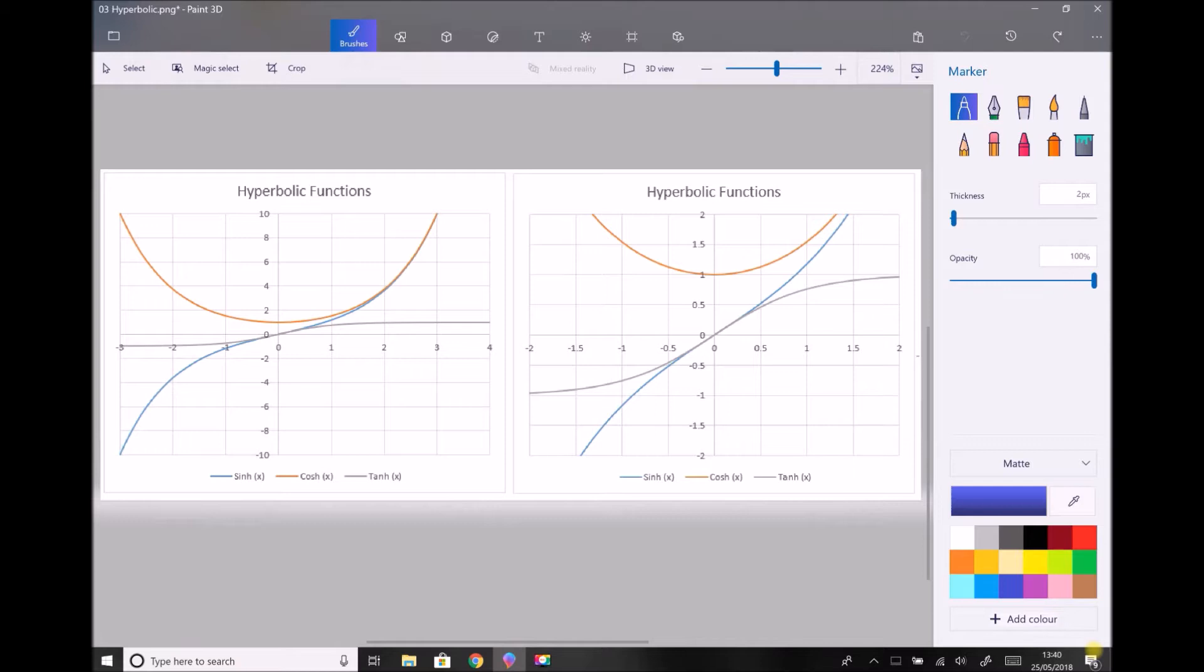Now the graph on the left-hand side of the page shows the three functions between the values of x equals minus three and three. As we look carefully, we can see that the hyperbolic sine function begins negative, and at x equals zero, it goes positive. And the shape of that graph somewhat resembles a cubic graph.